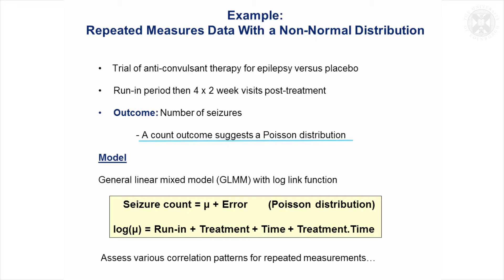You might think you could just log it and maybe just analyze that as normal data. But here, there were a lot of occurrences where patients had no seizures, so it wasn't ideal to take a log. You got a lot of values that were just going to be the same. Because it suggests a Poisson distribution, we might then do what's known as a general linear mixed model. That's a mixed model for non-normal data. We'll use a log-link function and assume that the errors have got a Poisson distribution.